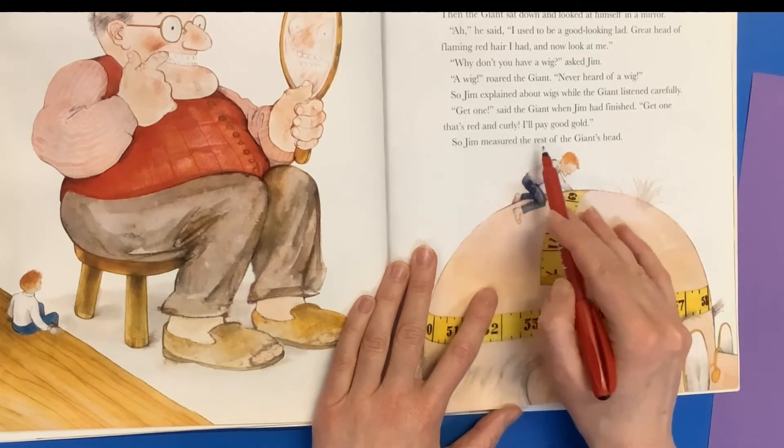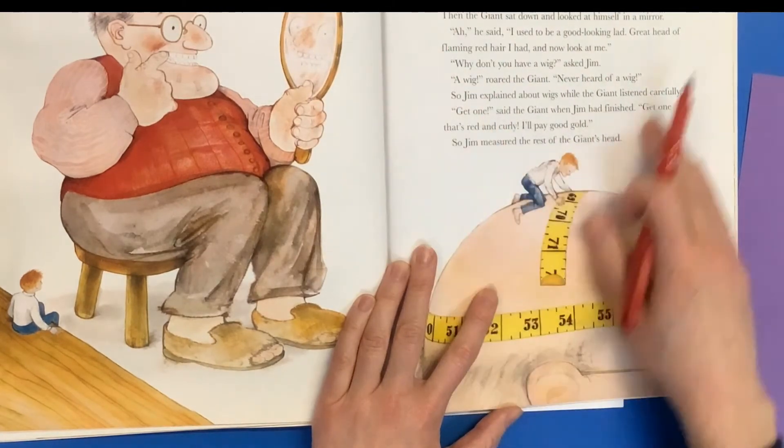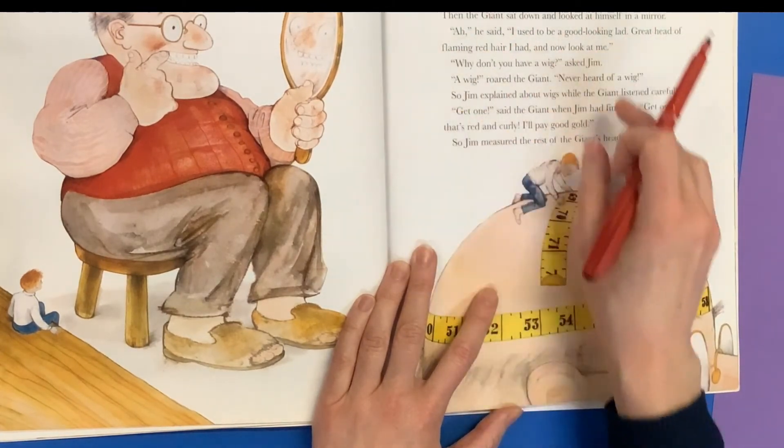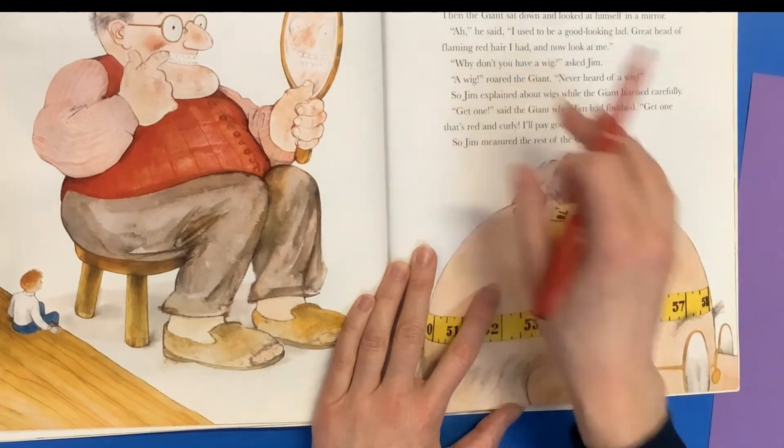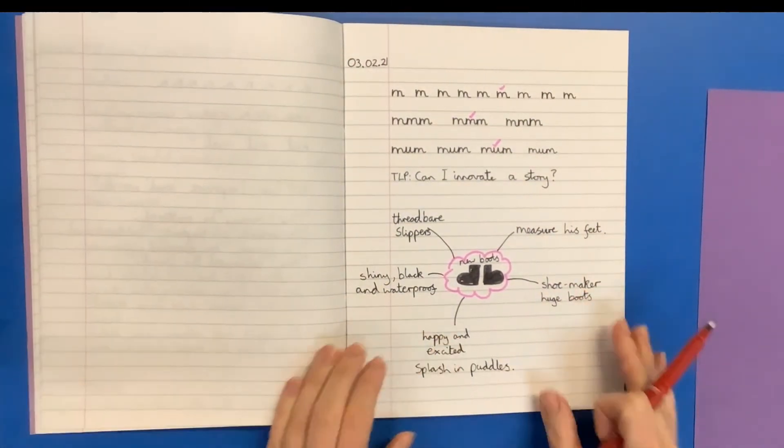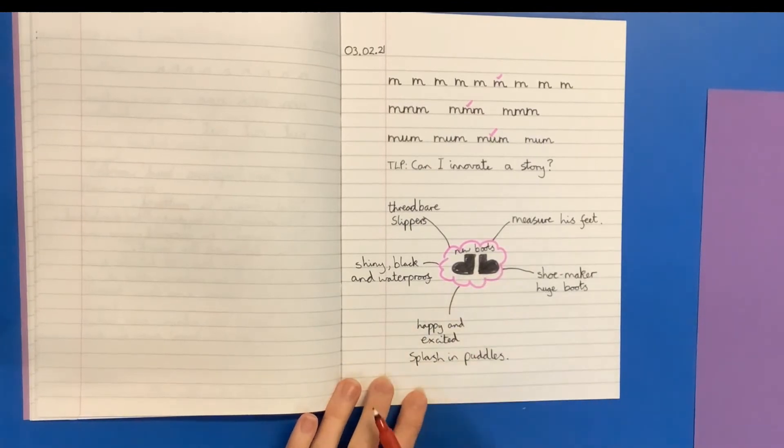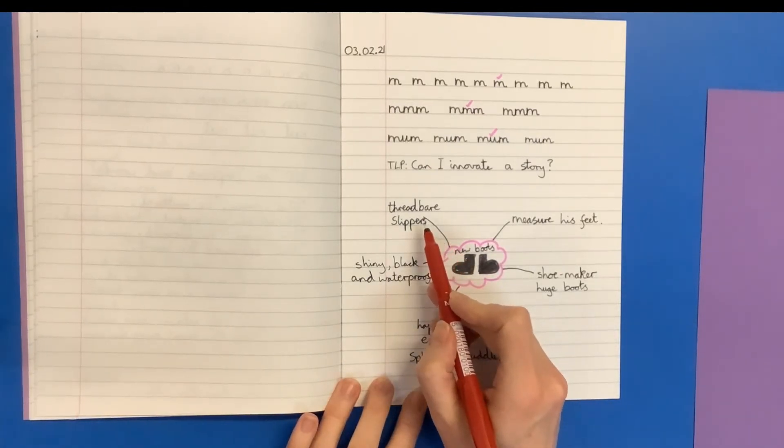So can you see I'm using the structure of the story, but I'm changing some of the words to match with my idea about boots. So today you're not going to be writing the whole innovative story. You're just going to be planning some ideas.